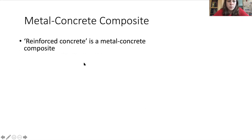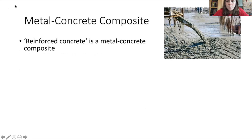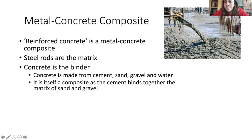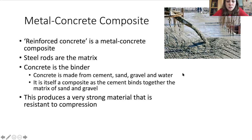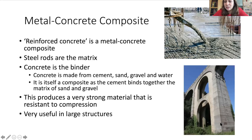Another area is a metal-concrete composite. Reinforced concrete - you can see we have steel rods as our matrix and the concrete is the binder that's poured around it. Concrete itself is a composite made of cement, sand, gravel and water, so the cement binds together that matrix of sand and gravel. When it's set you've got concrete with steel inside it, and that makes a really strong material that's resistant to compression - really good for making big structures strong so they can take that compression.